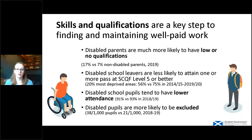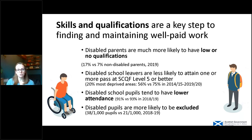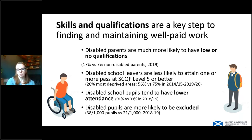Skills and qualifications are an important part of finding and keeping well-paid work, and there's quite a difference for disabled people. Disabled parents are much more likely to have low or no qualifications — 17% of disabled parents had low or no qualifications in 2019, compared to 7% of non-disabled parents. Tracing that back further, disabled school leavers are less likely to have one or more pass at SCQF level five or better, disabled school pupils tend to have slightly lower attendance, and disabled pupils are more likely to be excluded from school. It's important to tackle these differences from school level all the way through.